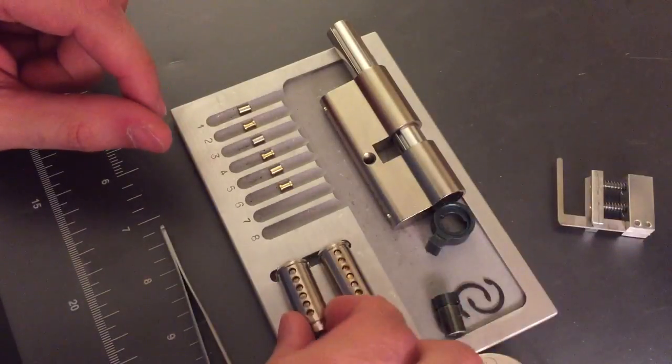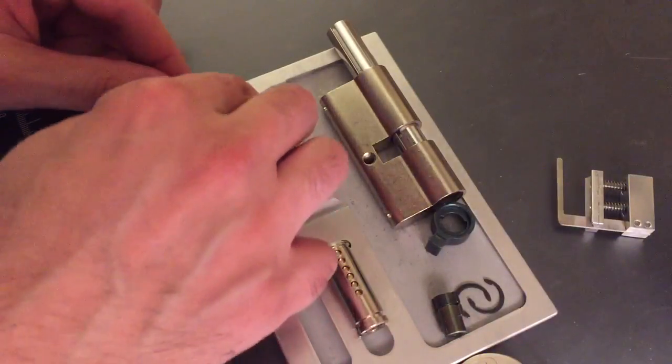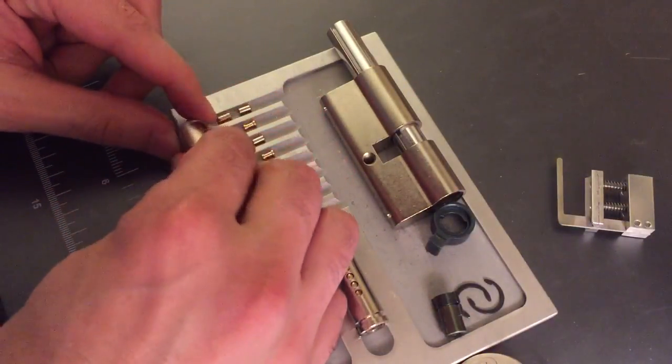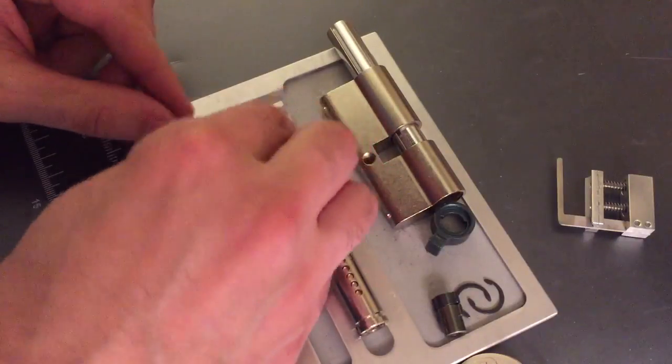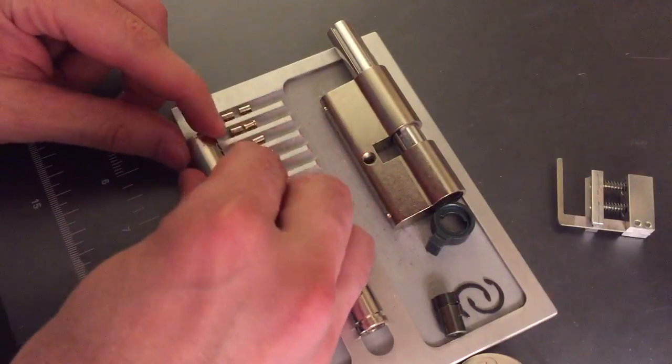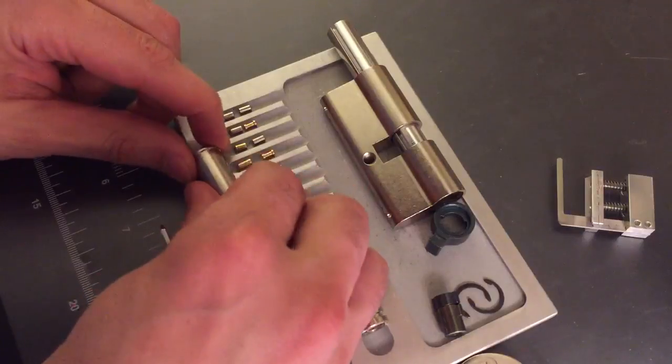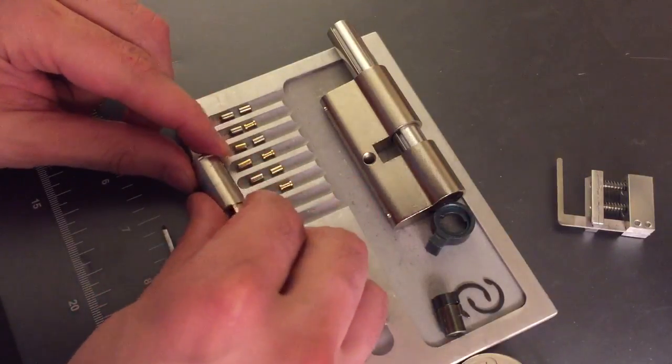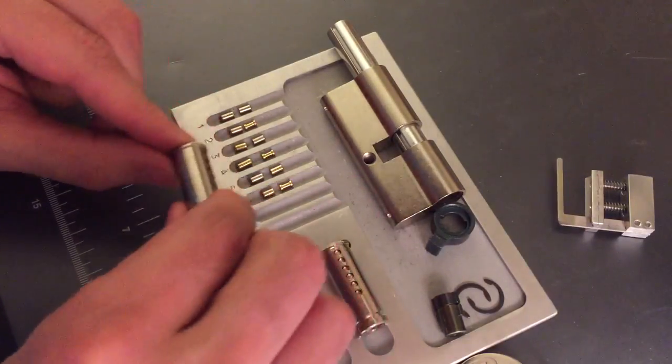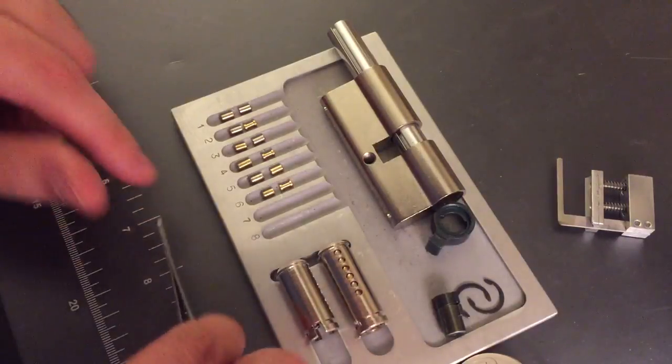Let me dump the key pins out. Number one looks like a steel standard. Same for two. Same for three. Four. Five is back to the steel. And then six is brass again. Let me get something to check if they're magnetic.